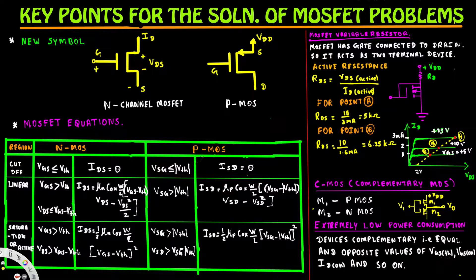For P-MOSFET to be in the linear region, VSG has to be greater than V-threshold magnitude. In that condition we use the equation: ISD equals mu_P · COX · (W/L) · [(VSG − |V_threshold|) · VSD − VSD² / 2].